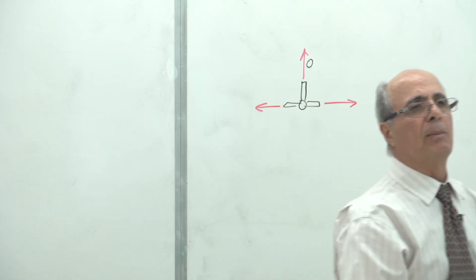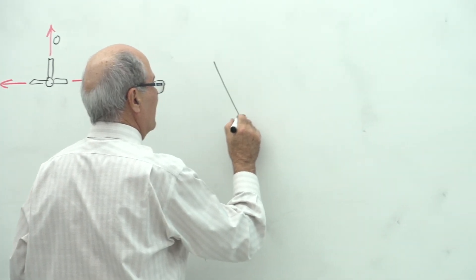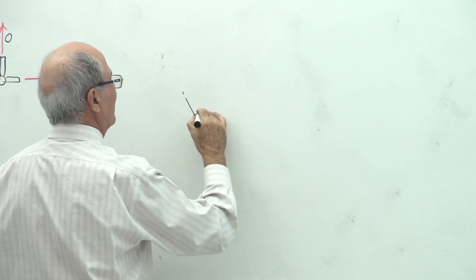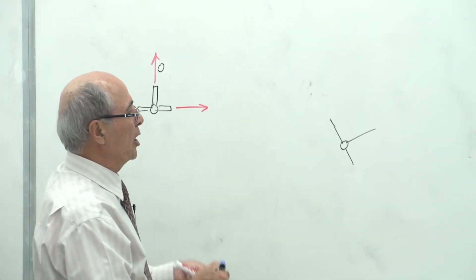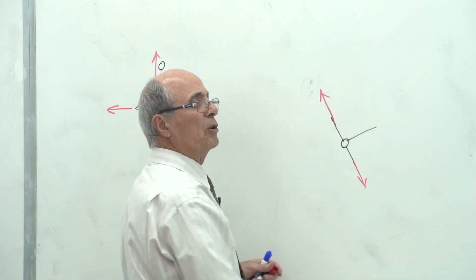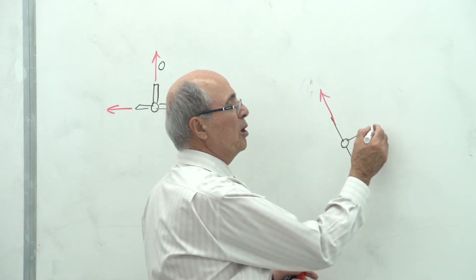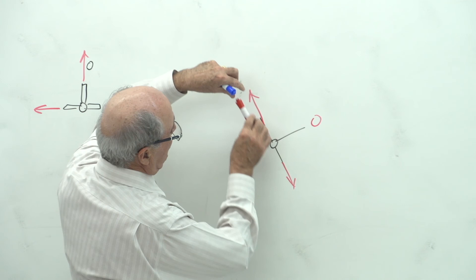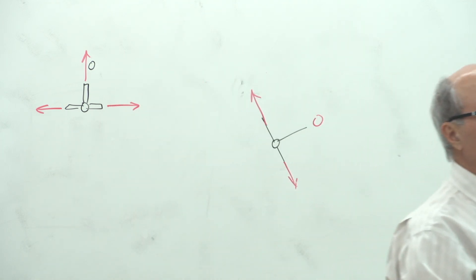Another zero-force case: a joint with two members at an angle and one member not collinear, with no external load. Because the angled member has a y-component with nothing to balance it, that member must be zero. Then the other two must be equal and opposite. If you cannot find any force to balance one component direction, the force in that member must equal zero. Always check for zero-force members before starting joint analysis.